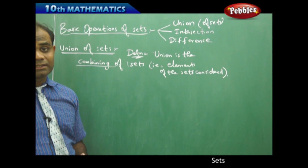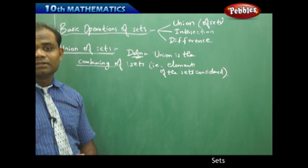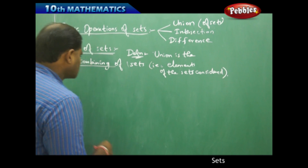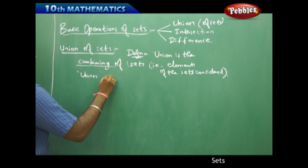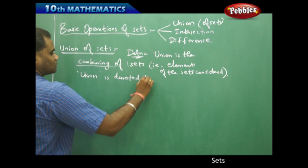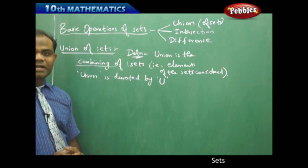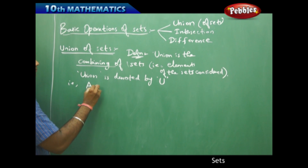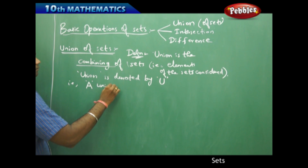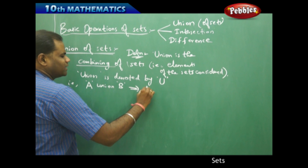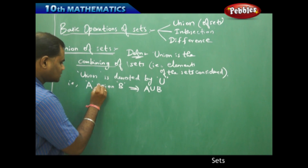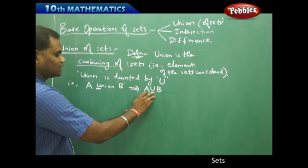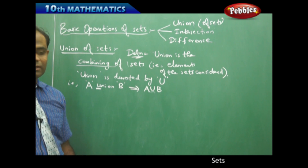Before proceeding, I want to be very particular about the notation. How do we denote union? Union is denoted by the symbol ∪ — U stands for union. So A union B is written mathematically as A ∪ B, which makes it clear that the ∪ symbol is directly related to union.